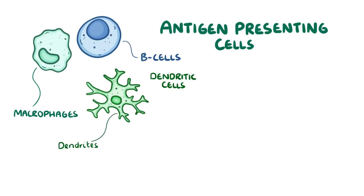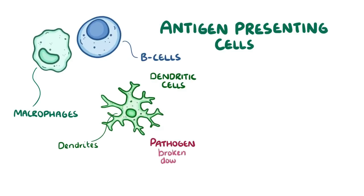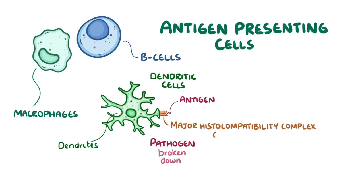When a dendritic cell comes into contact with a pathogen, it latches onto it, and with its dendrites it pulls it in and engulfs it. The pathogen is then broken down, and the dendritic cell presents a piece of it, called an antigen, on something called a major histocompatibility complex class 2 molecule, or MHC class 2 for short.